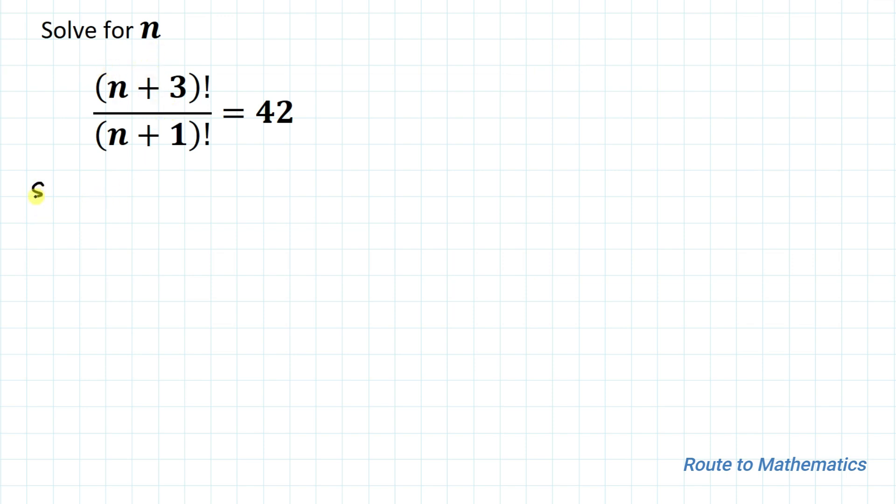So without any delay, let's start the solution. We have given one equation: (n+3)! divided by (n+1)! equals 42.